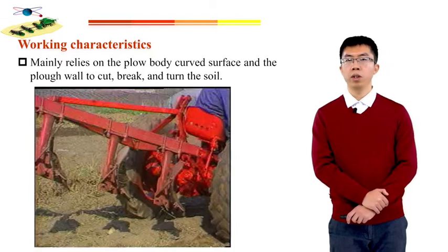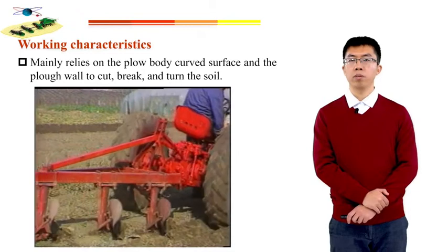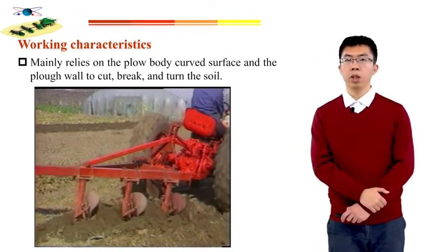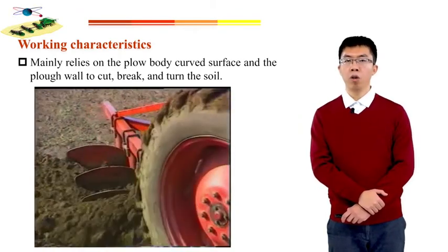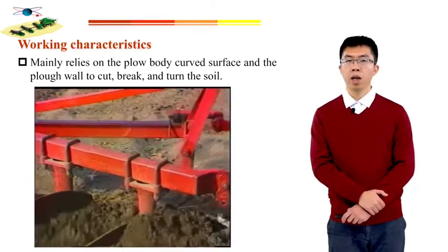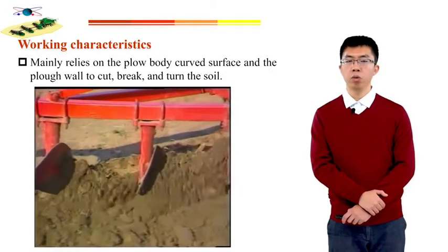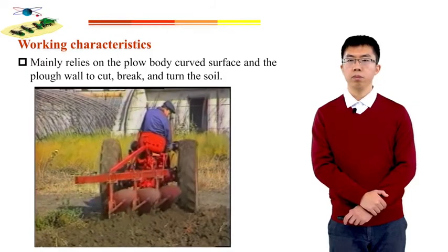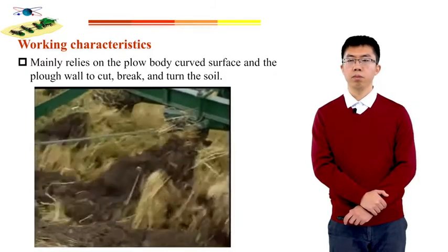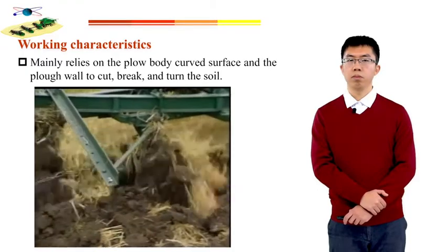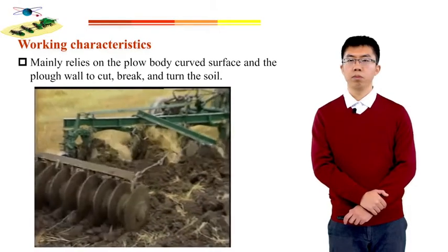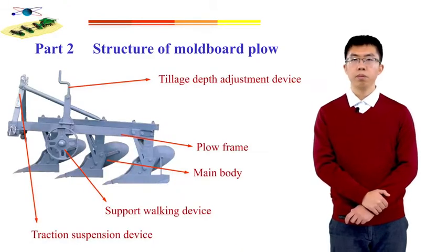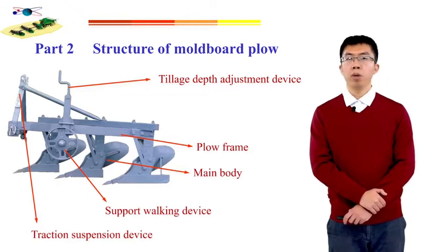Now I will show you a video about multiple plows in working conditions. When the plow is working, it mainly relies on the plow body curved surface — composed of the plow shell and the plow wall — to enter the soil, cut, break, and turn the soil so that the surface soil layer and the bottom soil can be exchanged, creating conditions for crop growth. The structure of a multiple plow contains plow frame, main body, supporting walking device, tillage depth adjustment device, and traction suspension device.